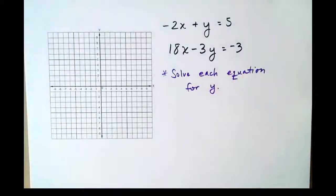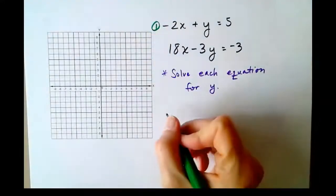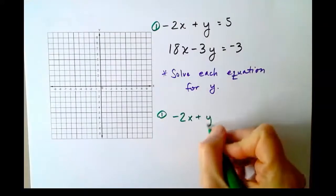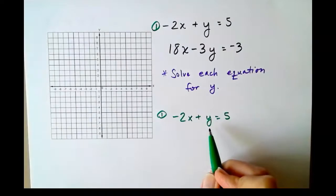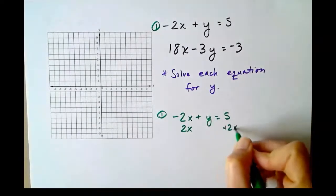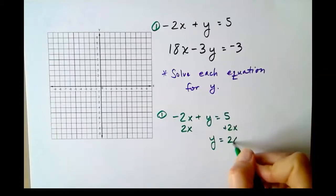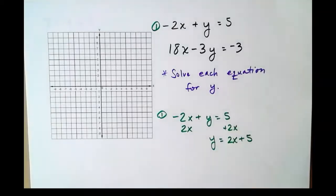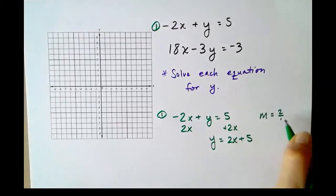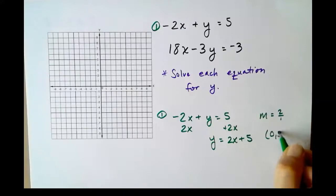When we solve an equation for y, that allows us to put it in slope-intercept form. So we're going to take the first equation, which I'll keep green. The first equation, -2x + y = 5. In order to get the y by itself, we need to add 2x to both sides. Therefore y = 2x + 5. This allows us to easily see that our slope for the green line is 2 over 1, and our y-intercept is 5.